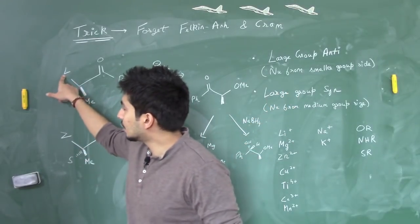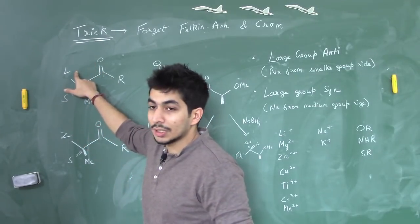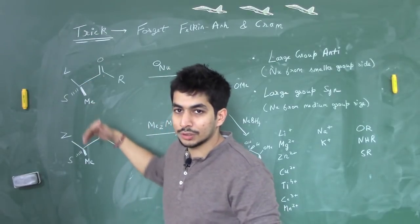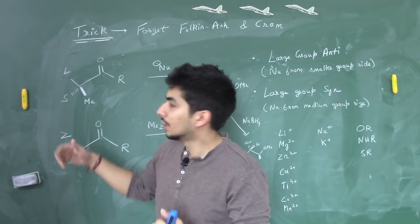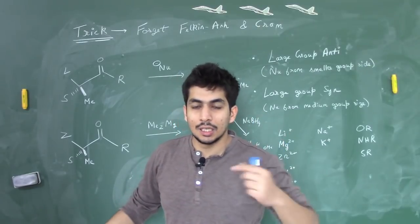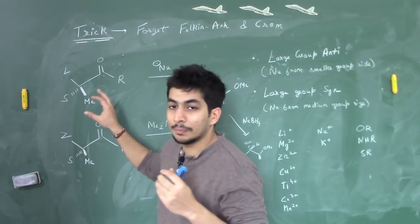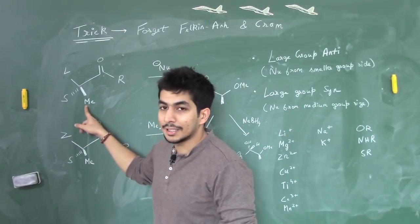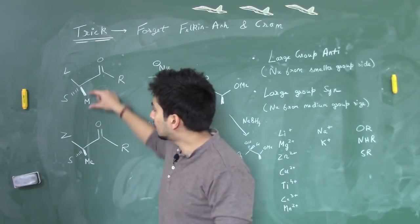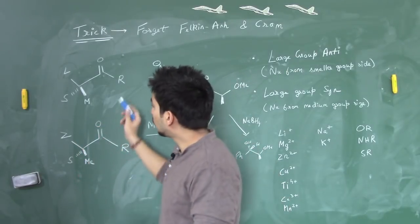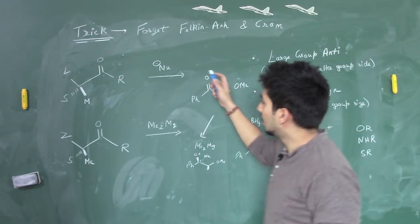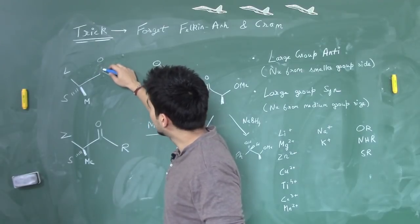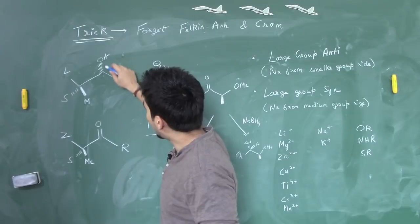In this diagram, the large group and ketone are syn — both in the same plane. If the L group goes in the anti-periplanar arrangement it becomes anti. Here, since the large group is syn to the ketone, the nucleophile attacks from where the medium group is present. The medium group (M) is above the plane, so the nucleophile attacks from above the plane. Therefore, the OH goes below the plane and the nucleophile attached will be above the plane.